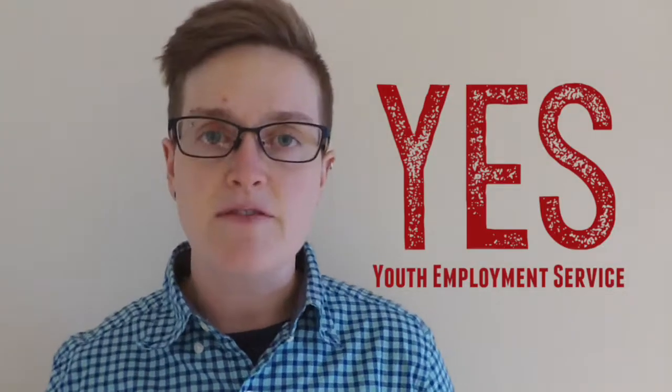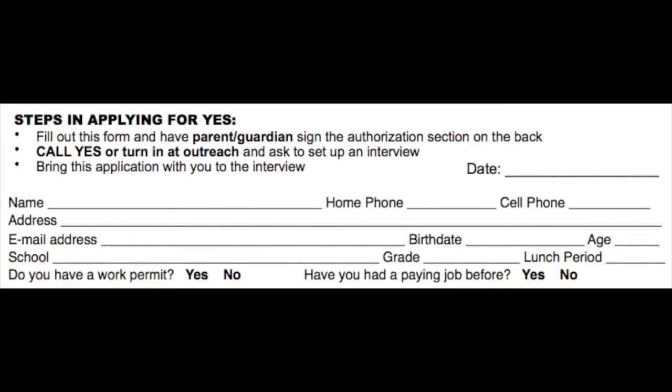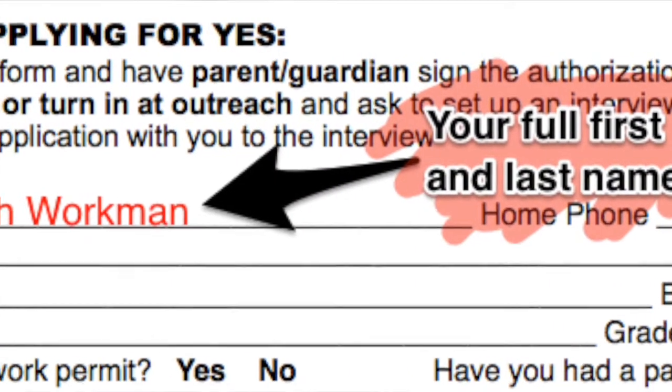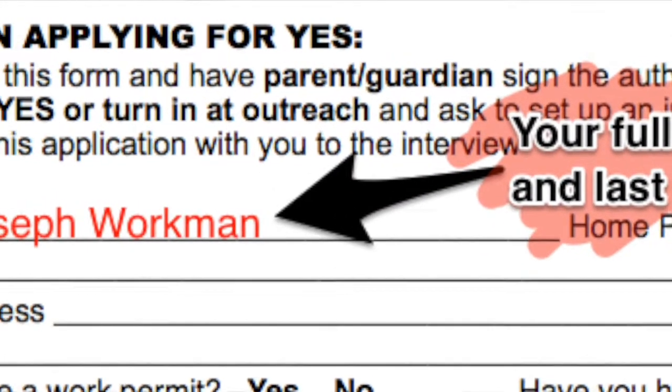Hey everyone, this is Emily from Youth Employment Service. This covers the first section of the YES application: the contact information. Under the section that says name, if you have any nicknames you can include those.